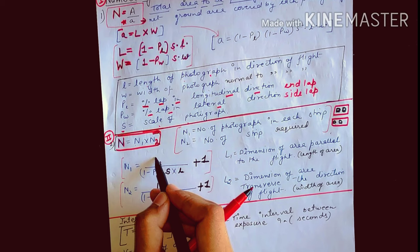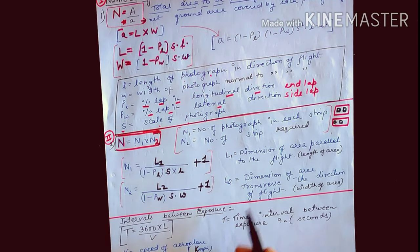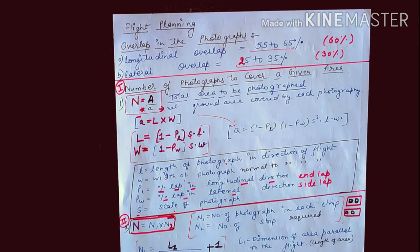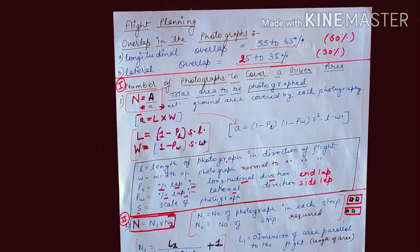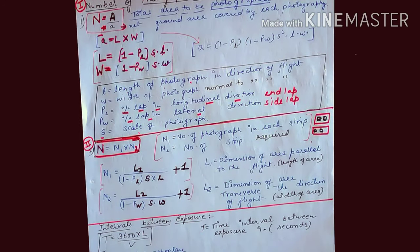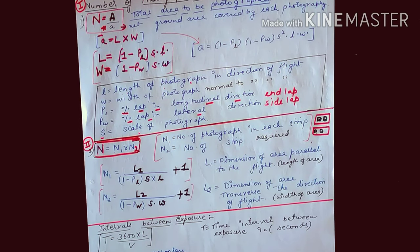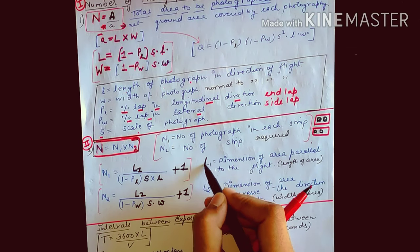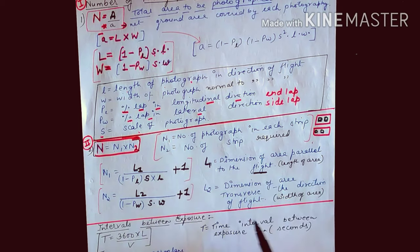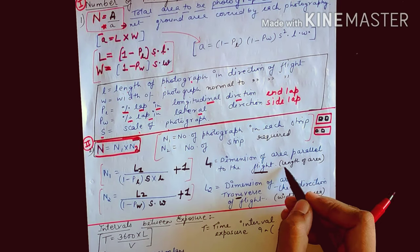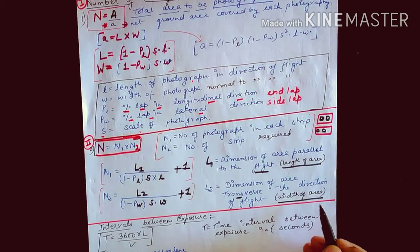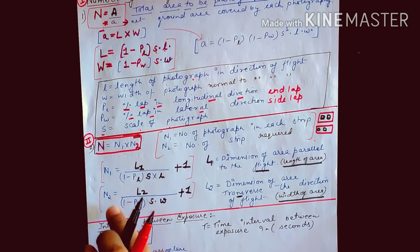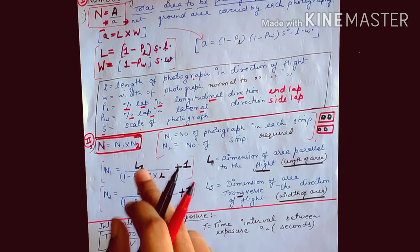L1 and L2 are the area dimensions. In this second type of problem, the area is given as L1 × L2 — dimension of area parallel to the flight (L1) and dimension transverse to the flight (L2), i.e., length and width of the area. If total area is given directly (e.g., 100 square kilometers) with no length or width, use n = A / a. If L1 and L2 are given, use N1 × N2.